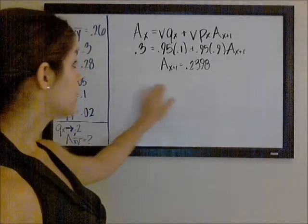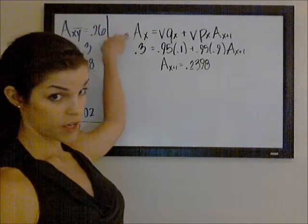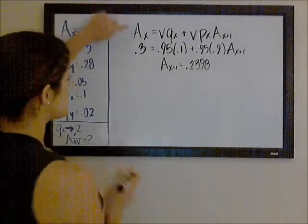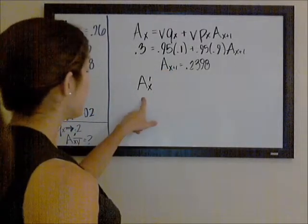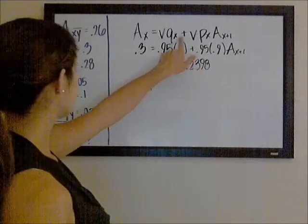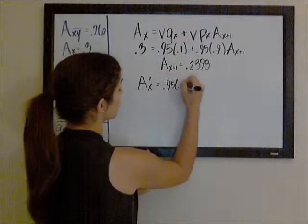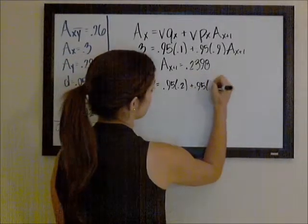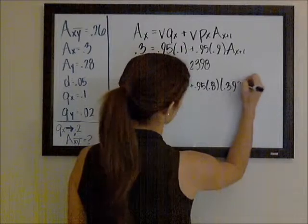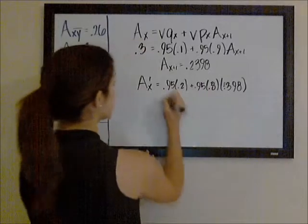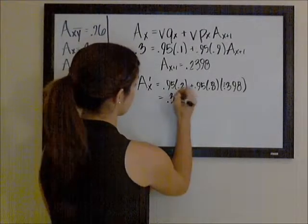Now I'm going to go backwards using what we know about our new survival probabilities and how those change to get our new actuarial present value of our insurance on x. So our new actuarial present value of this insurance — we use the same recursive formula — but now our probability of dying in the first year is 0.2. That makes our P 0.8, and we know that our insurance at x plus one is 0.2398. So our new AX turns out to be 0.3722.